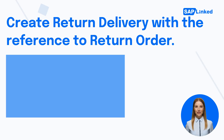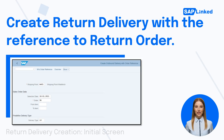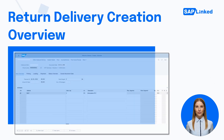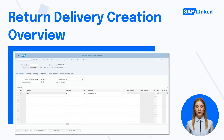Now we will cover the next flow step: creating return delivery. Go to transaction VL01N. On the initial screen of delivery creation, enter the shipping point, return order number, and delivery type LAR (return delivery). On the overview screen of return delivery creation, check the data, verify the return delivery quantity, and save it.